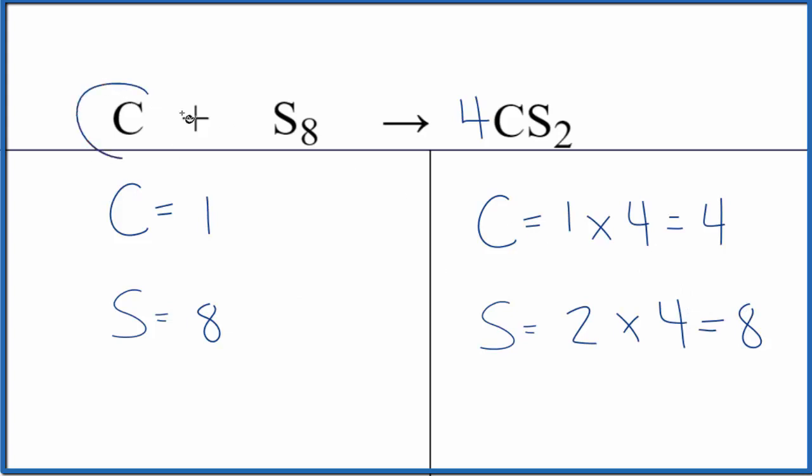Now since this carbon's by itself, we change the coefficient, it won't change the number of sulfurs. So we just put a four as the coefficient for carbon. One times four, that'll give us four and we're done. This equation is balanced.